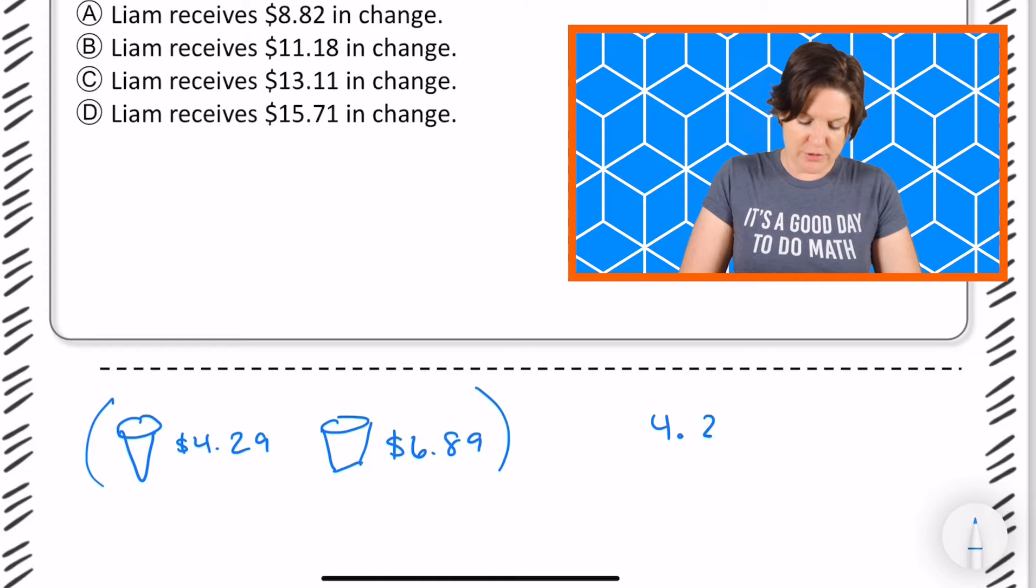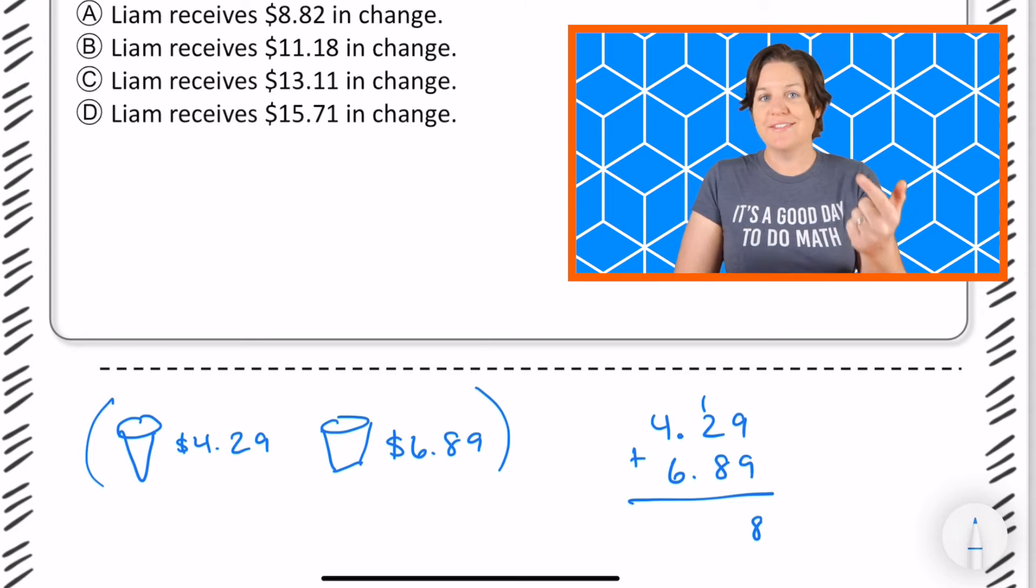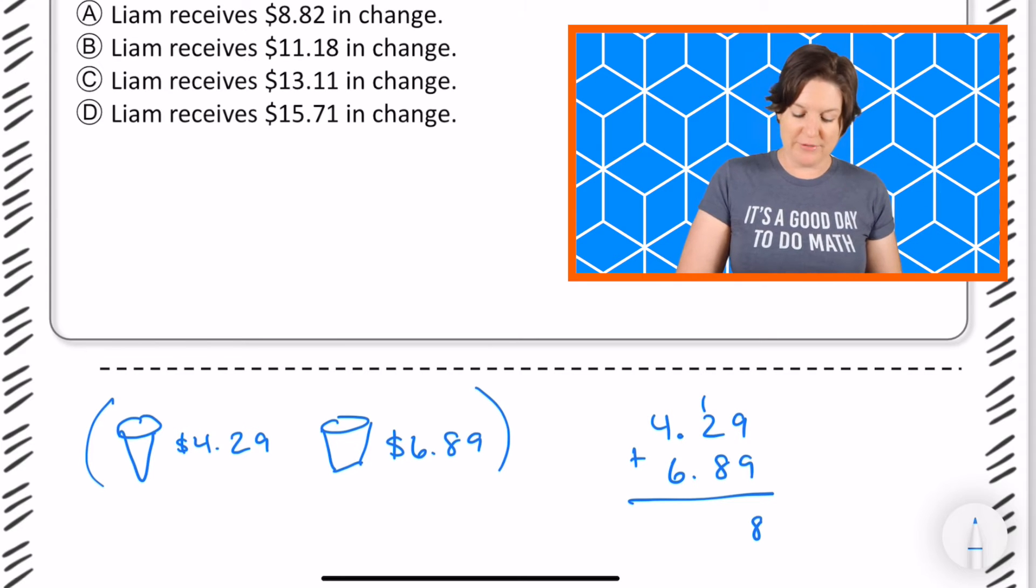So $4.29 plus $6.89. Nine plus nine is eighteen, what's high up here, nice landing dude. Two plus eight equals ten plus one would be eleven, what's high up here, nice landing dude.